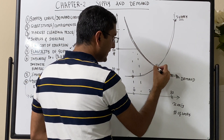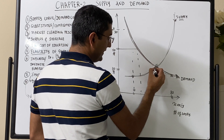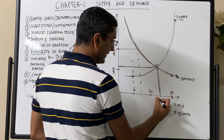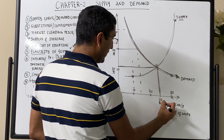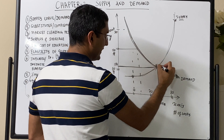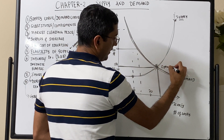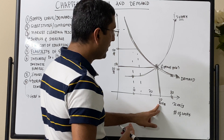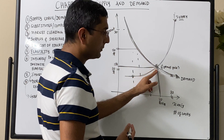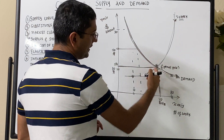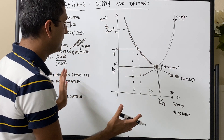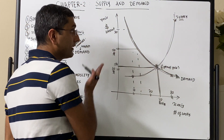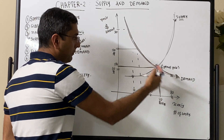Where the supply and demand curves meet, that point is called the equilibrium or the market clearing price. Let's say this is 25 units at $12 — this is the market clearing price, the optimal price. Optimal in the sense that the number of units demanded is the most cost-effective at this point. So in a competitive market, which we will assume for the rest of this chapter, there will be an optimal market clearing price.